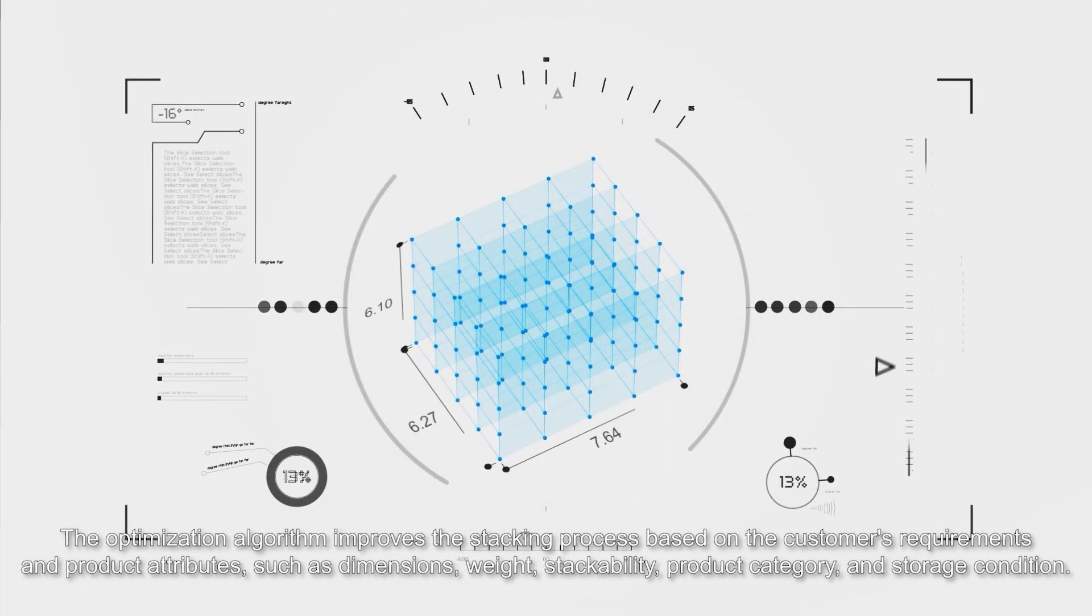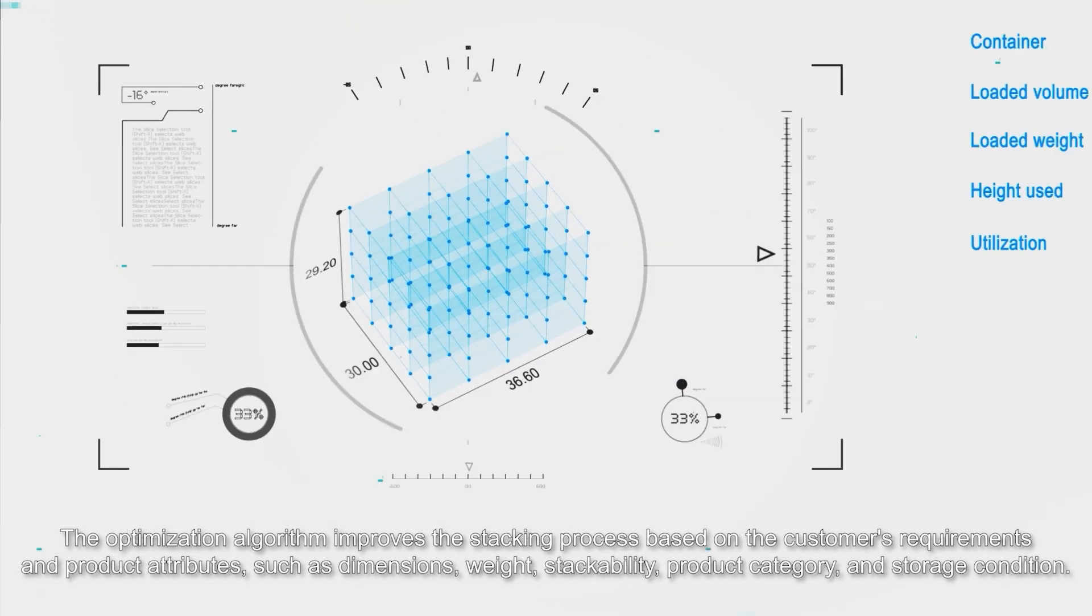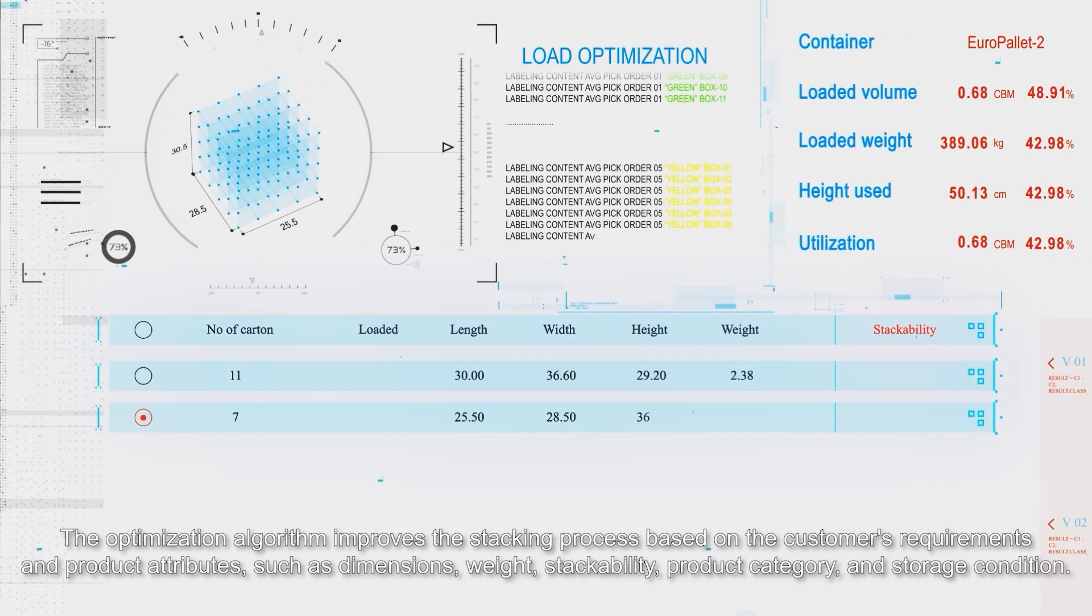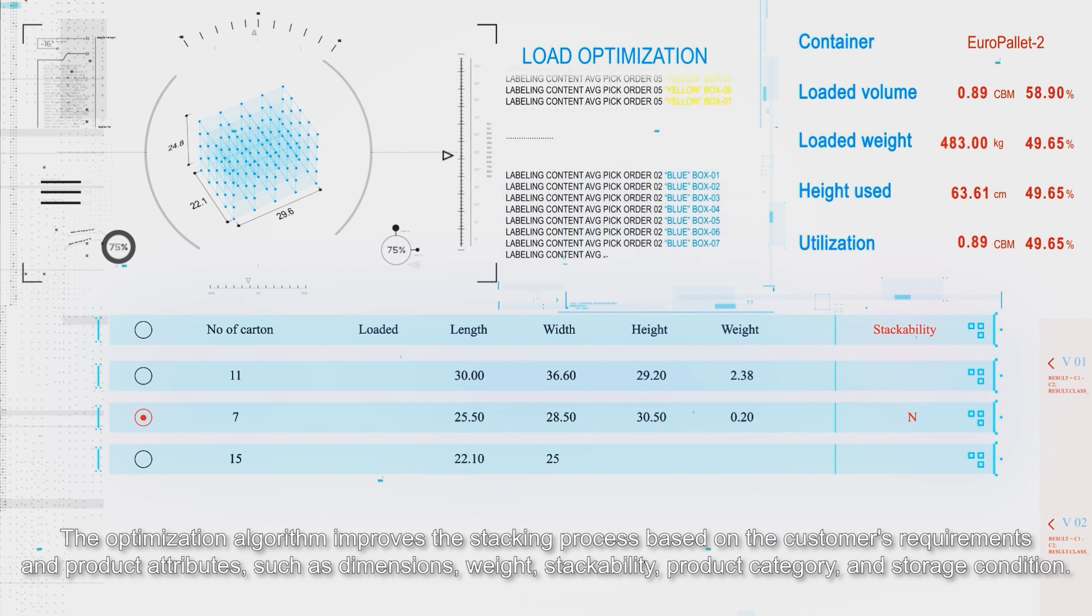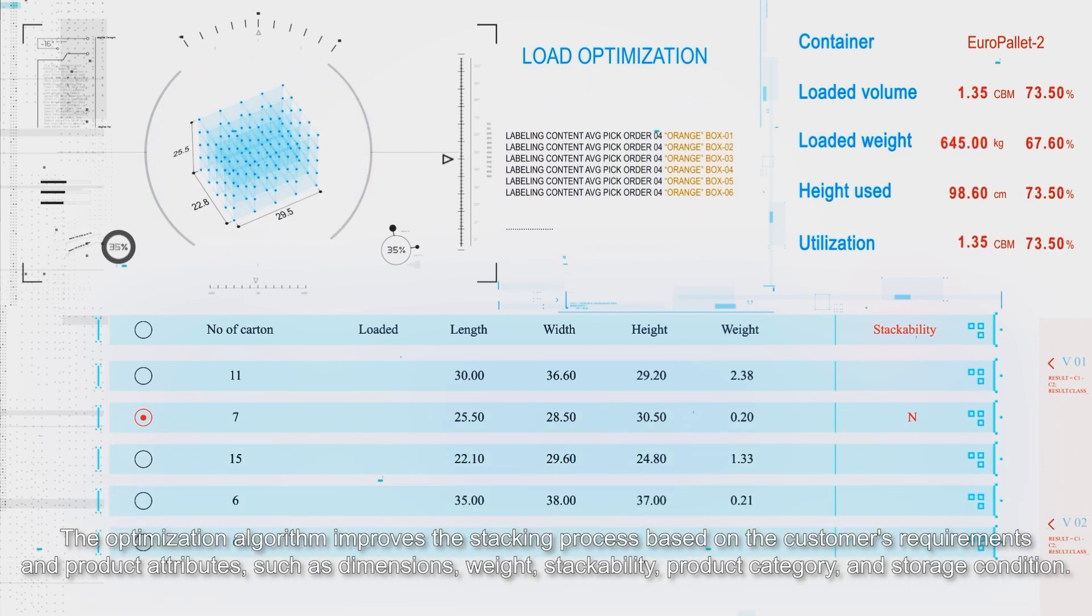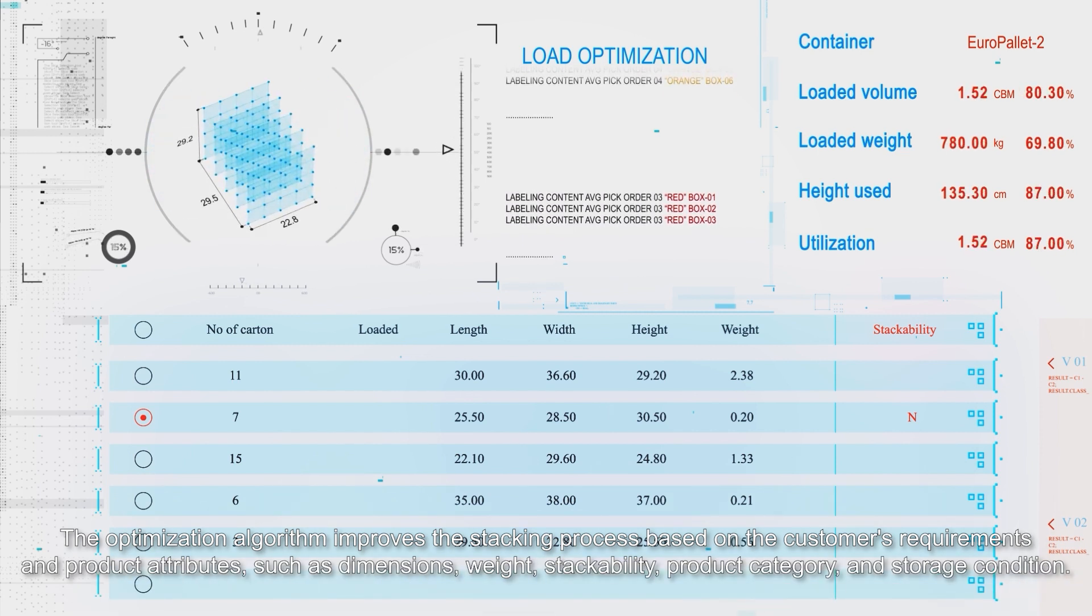The optimization algorithm improves the stacking process based on the customer's requirements and product attributes, such as dimensions, weight, stackability, product category, and storage condition.